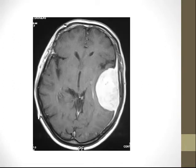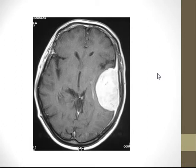Here is the MRI image of a patient with meningioma of the left cerebral hemisphere. As you can see, there are these two tail-like structures adjacent to the tumor. These are called dural tails and they are hallmarks of meningiomas. They occur because of dural thickening in response to these tumors.